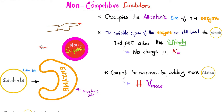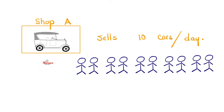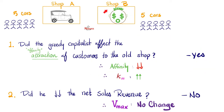And again, it's the only inhibitor that does not lower your Vmax. Next, non-competitive inhibitors. No change in the affinity, which means no change in the Km. However, since we cannot overcome them, they lower the Vmax.